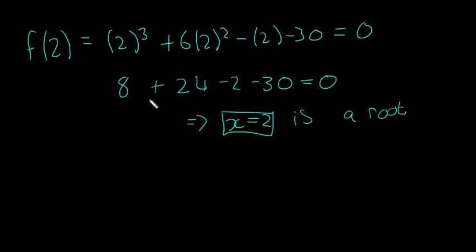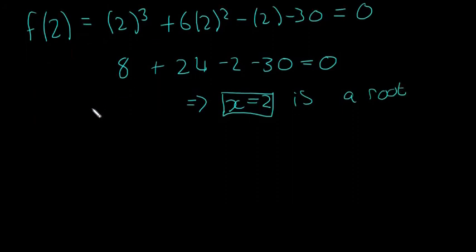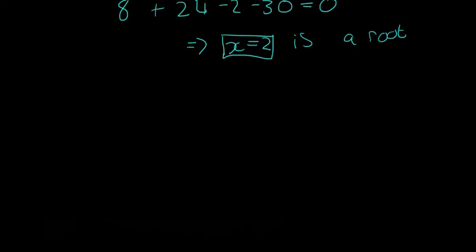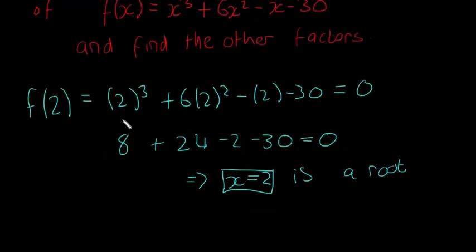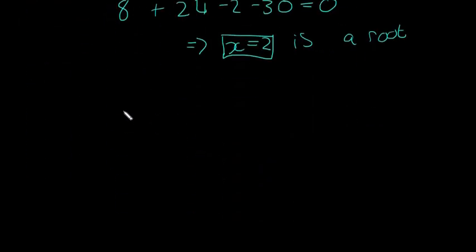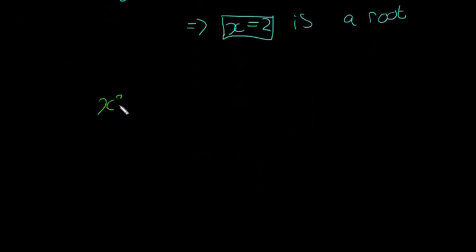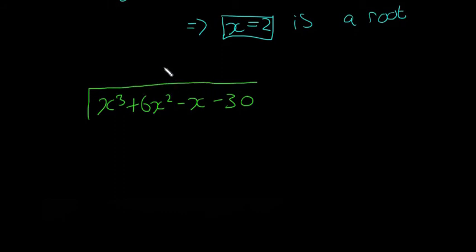This implies that x equals 2 is a root. Perfect, so we were right. Now we can run on with the next bit of the question, and find the other factors. I'm just going to go back up and get it, it's x cubed plus 6x squared minus x minus 30. We're going to do long division here to get to the two factors. And x is equal to 2 as a root, so that means x minus 2 will be the factor.